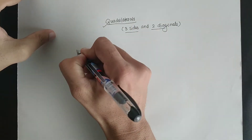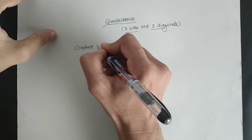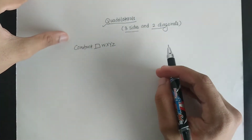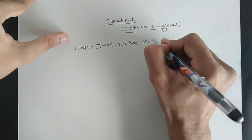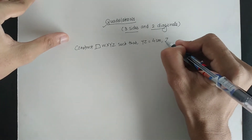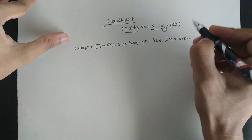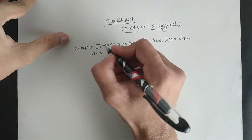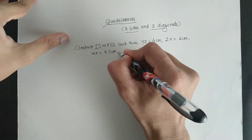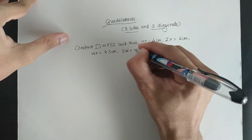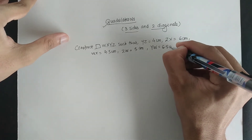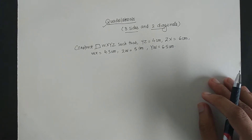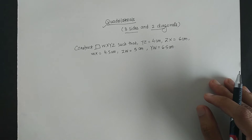Construct quadrilateral WXYZ such that YZ is equal to 4 centimetre, ZX is equal to 6 centimetre, WX is equal to 4.5 centimetre, ZW equals to 5 centimetre, and YW is equal to 6.5 centimetre. So here we have the dimension of three sides — YZ, ZW and WX — and we have the dimension of two diagonals, that is XZ and YW.